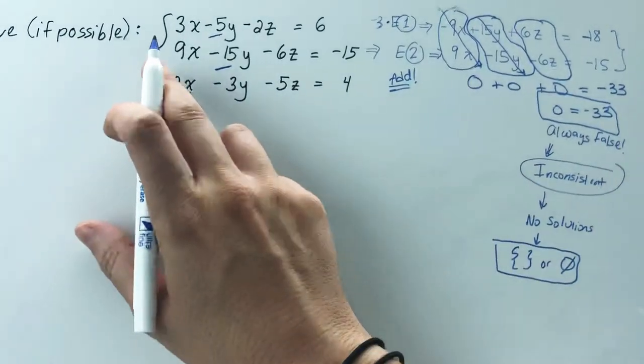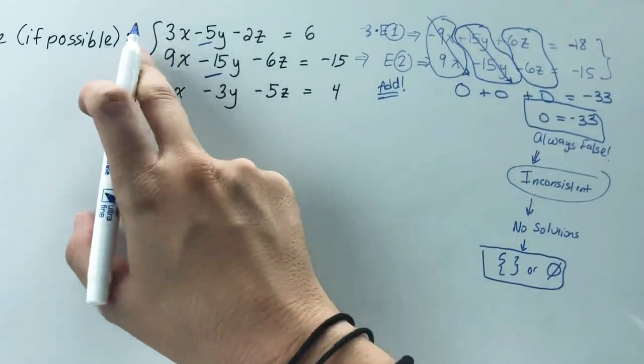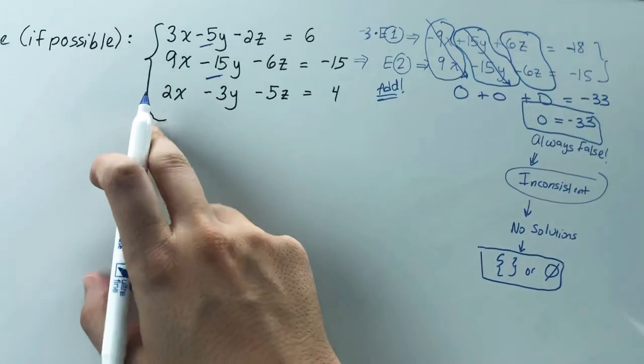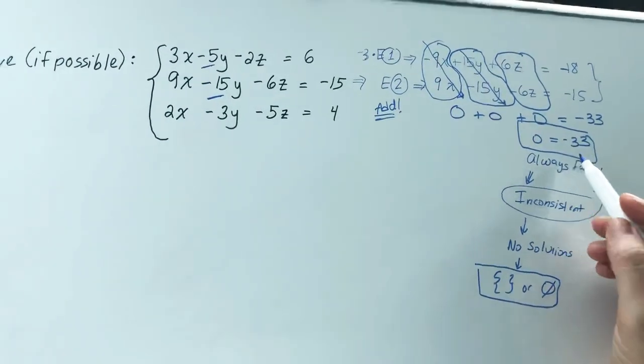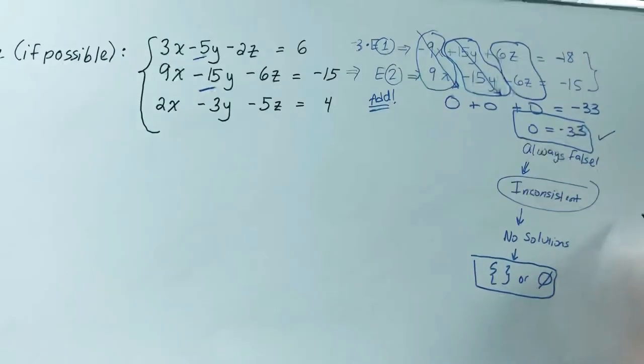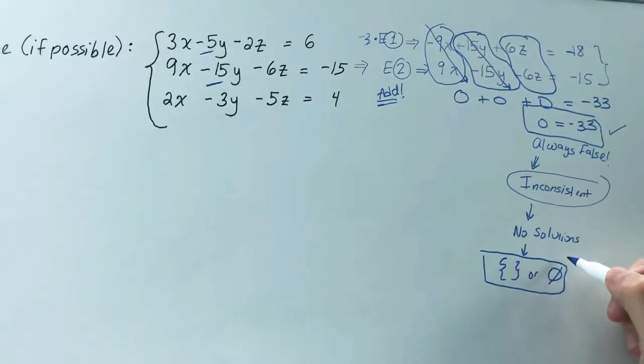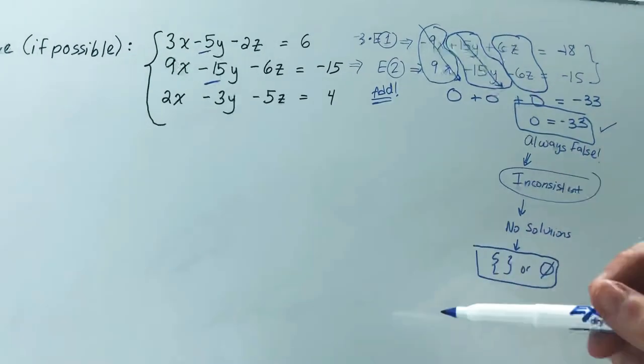Now again, if you had picked different equations to work with, like equations 1 and 3 or equations 2 and 3, you might have gotten further in the problem before you eventually get something false. But eventually, once you get to this point, you can declare that this is an inconsistent system because if it's false, it can't happen.